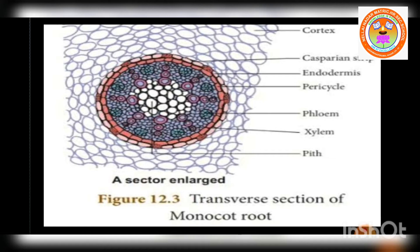Pericycle is a single layer of thin-walled cells — it is the outermost layer of the stele. The lateral roots originate from this layer. Next to that, we can see vascular tissues. They consist of many patches of xylem and phloem arranged radially, with xylem and phloem arranged in different radii in an alternate manner. This is called radial arrangement.